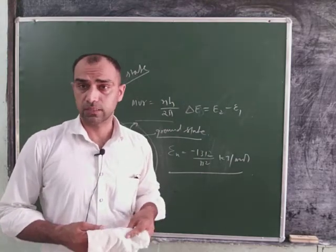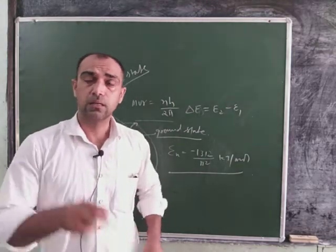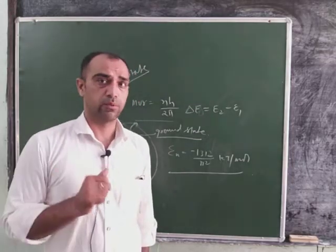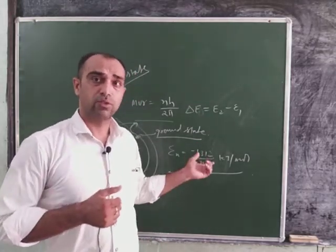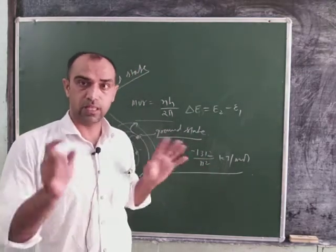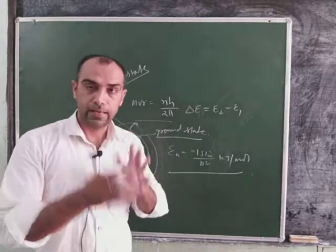The energy that was given by this formula, the energy level, the energy given, like we had said in Bohr's atomic model, that each shell has its own energy, and that is the energy of electrons as well. So the energy that was given by this formula, minus 1312 divided by n square kilojoule per mole, we gave it from basically the hydrogen and hydrogen-like atoms.